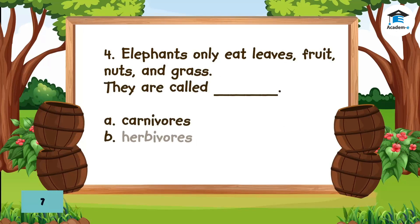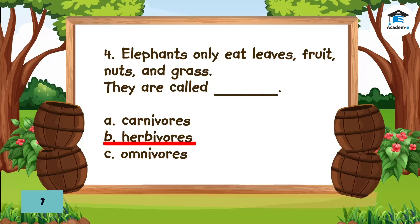Question 4: Elephants only eat leaves, fruit, nuts, and grass. They are called — A. Carnivores. B. Herbivores. C. Omnivores. The answer is B. Herbivores.